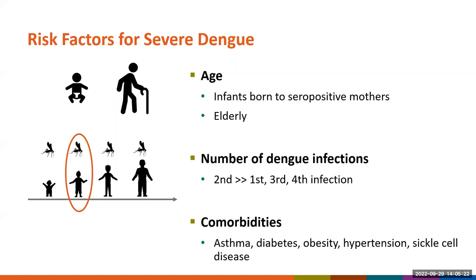Many factors can affect an individual's risk for severe dengue. There is a known risk by age, with particularly higher risk among infants born to seropositive mothers, as well as elderly populations. The number of dengue infections and the time between those infections can also play a role. Although severe dengue can occur during any dengue infection, there's a higher risk on the second dengue infection compared to the first, third, or fourth infection. Underlying comorbidities can also be associated with worse outcomes, including asthma, diabetes, obesity, hypertension, and sickle cell disease.